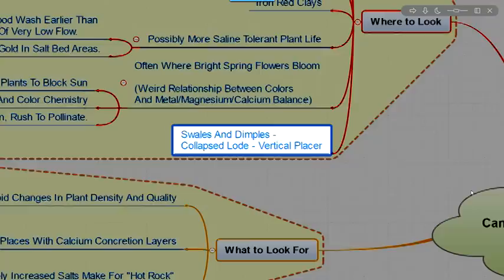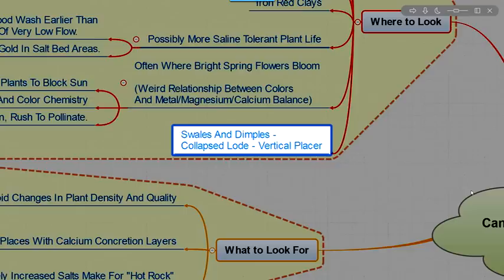Also look for swales and dimples. This is a geologic feature that you'll be looking for in the desert. And that is in the sands and in the dirts and soils, you might find an area where there's like a dimple. And then there's dead vegetation right in the center toward the middle of that dimple. That might tell you that there's an old lode that died out down below the dimple.